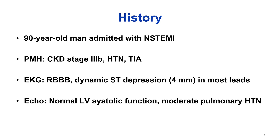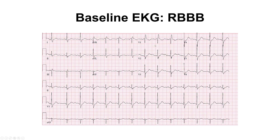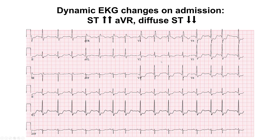The patient was an elderly man who presented with a non-ST elevation myocardial infarction. He had chronic kidney disease but normal left ventricular systolic function. He did have a baseline right bundle branch block on the EKG with significant dynamic ST segment changes when he was having chest discomfort.